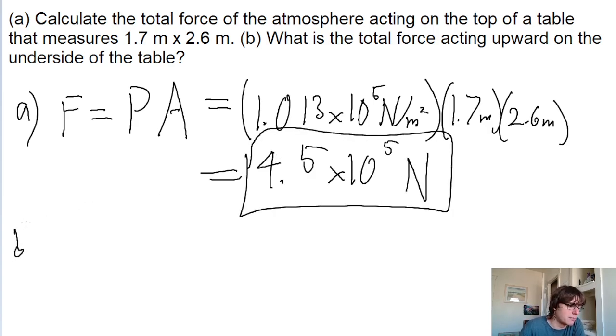Now for part B, which asks about the total force acting upward on the underside of the table. This part is very simple because the underside of the table is still exposed to atmospheric pressure, so it's exposed to the same magnitude of pressure and the same dimensions.